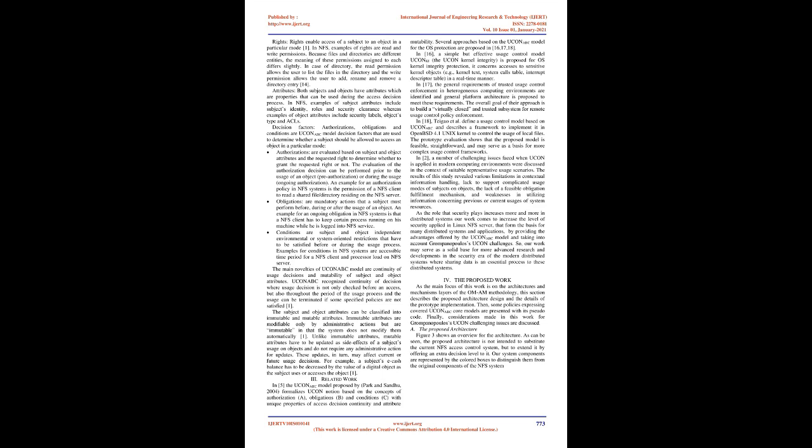Rights enable access of a subject to an object in a particular mode. In NFS, examples of rights are read and write permissions. Because files and directories are different entities, the meaning of these permissions differs slightly. For a directory, the read permission allows the user to list files, and the write permission allows the user to add, rename, and remove a directory entry. Both subjects and objects have attributes which are properties used during the access decision process. In NFS, examples of subject attributes include subject identity, roles, and security clearance, whereas examples of object attributes include security labels, object type, and ACLs.